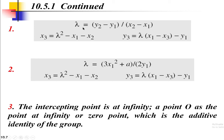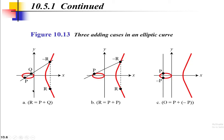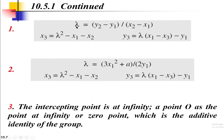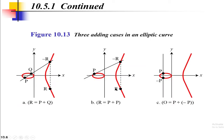Let R have coordinates (x₃, y₃). The slope lambda is: λ = (y₂ − y₁) / (x₂ − x₁). Then x₃ = λ² − x₁ − x₂, and y₃ = λ(x₁ − x₃) − y₁. This is how we calculate the addition of two points, which is called point addition.